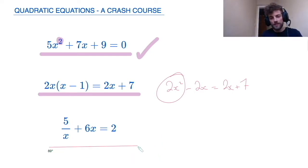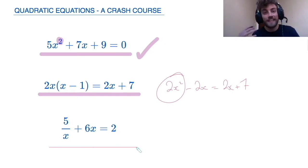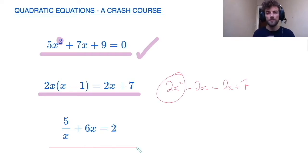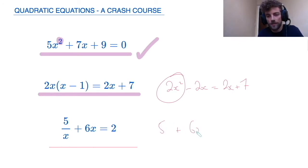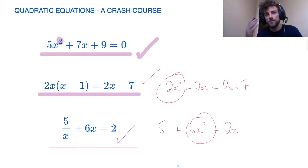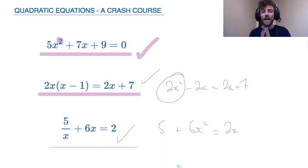Finally, that brings us to this one here. This is what I like to call a hidden quadratic equation. Quadratic equations can be hidden in many different forms, but this is one of the most common ones. At first glance, it doesn't really look like a quadratic. But if I times through both sides of the equation by x, which is absolutely fine in maths, then I will get a quadratic equation. So do keep your eyes peeled for these hidden quadratic equations. They don't come up too much at GCSE level, but they are an absolute favourite at A level and they do trip a lot of people up.